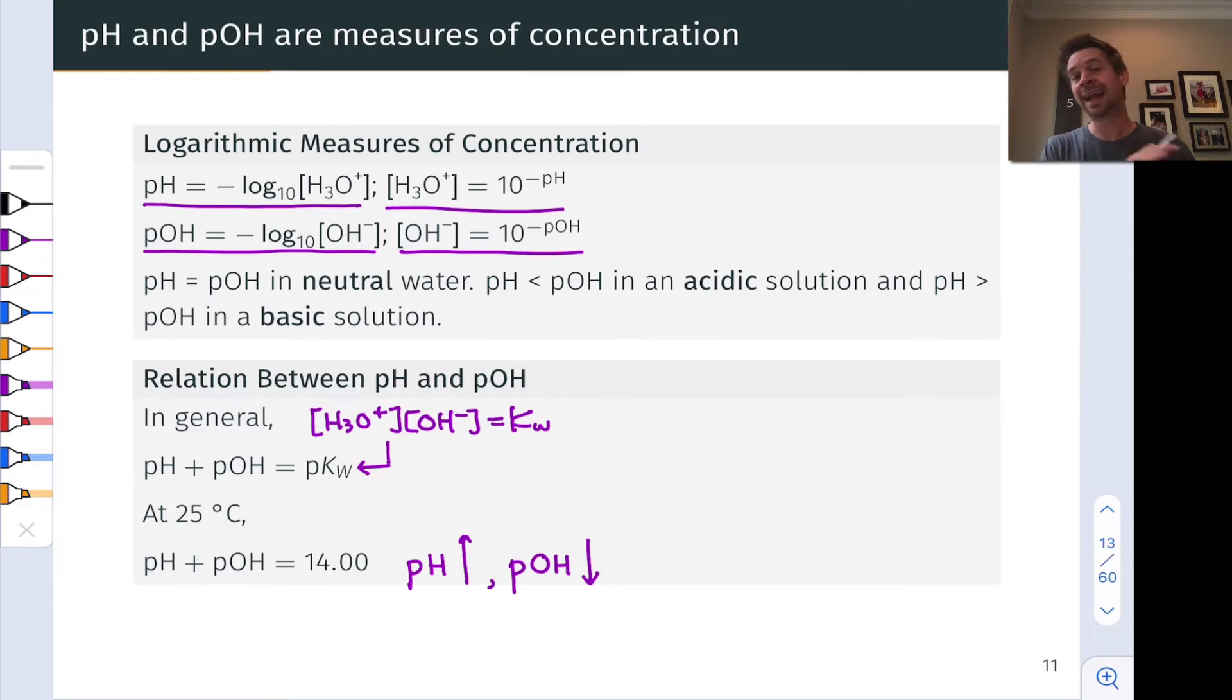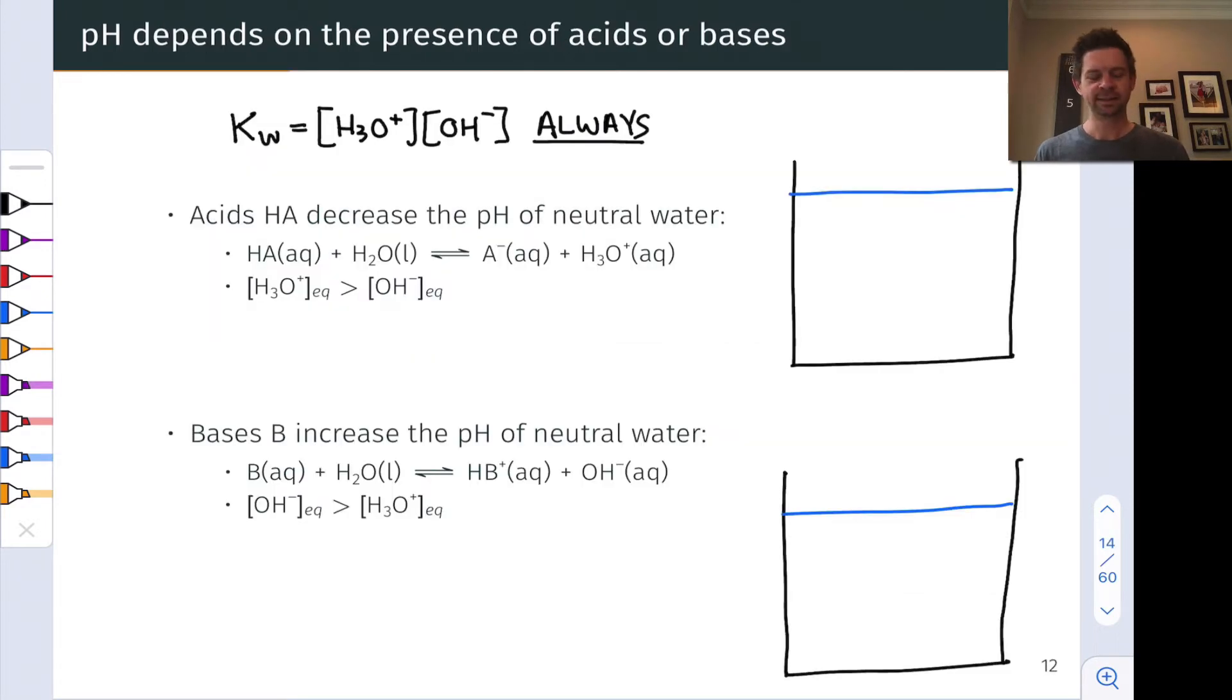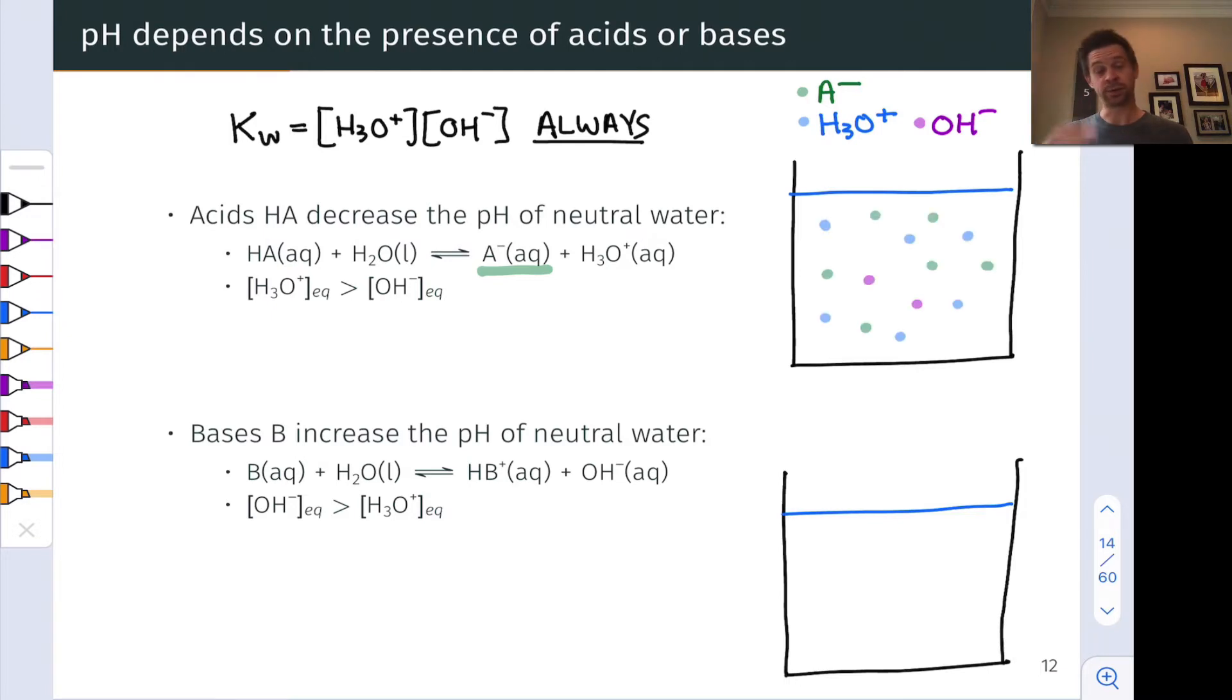This goes back to the point we made that in any solution, an aqueous solution, whether it contains an acid or a base, and regardless of its temperature, pH plus pOH must be equal to 14, or in other words, the equilibrium equation for the self-ionization of water must be obeyed. Let's dig a little bit deeper now into this idea that pH depends on the presence of an acid or base in an aqueous solution. To start, let's remind ourselves of what we just said, that the equilibrium equation for the self-ionization of water is always obeyed. So H3O+ concentration times the OH- concentration is always equal to KW. Now, in essence, by the definition of an acid, how we've defined a Brønsted acid, acids decrease the pH of neutral water, and they do so by reacting with water to produce hydronium ions.